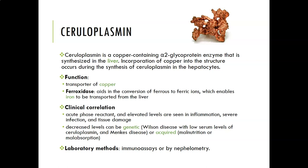Ceruloplasmin is an acute phase reactant, so it goes up with inflammation, severe infection, and tissue damage. Decreased levels can be genetic — Wilson's disease is the most common condition with low serum ceruloplasmin levels, and Menke's disease as well. It can also be decreased due to acquired conditions like malnutrition or malabsorption of copper and proteins. Lab methods are immunoassays or nephelometry.